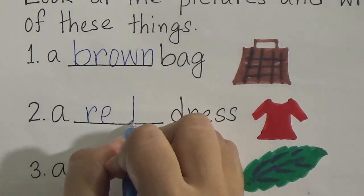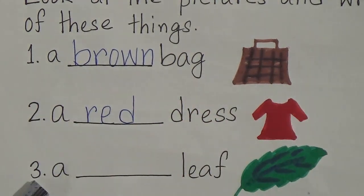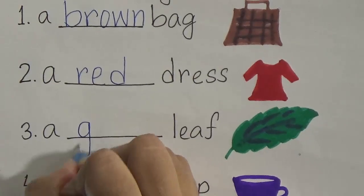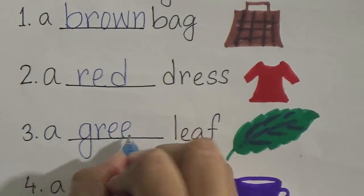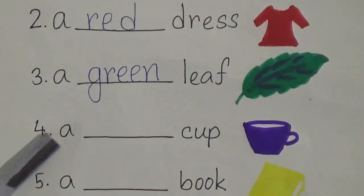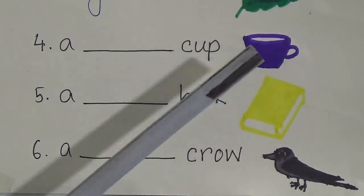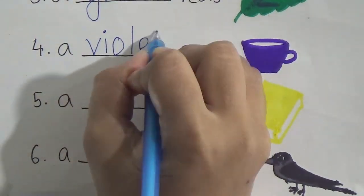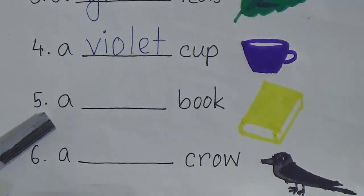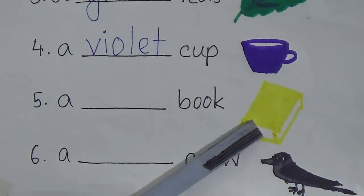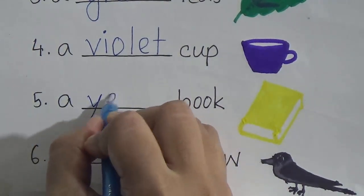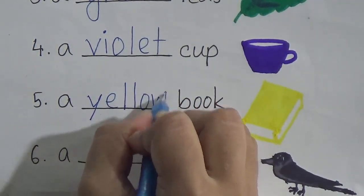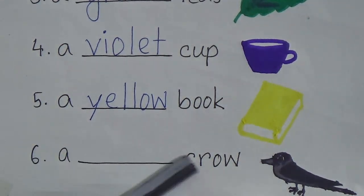Number three: a blank sleeve — the color of the sleeve is green. We will write here: green (G-R-E-E-N). Number four: a blank cup — the color of this cup is violet. We will write here: violet (V-I-O-L-E-T). Number five: a blank book — the color of this book is yellow. We will write here: yellow (Y-E-L-L-O-W). Number six: a blank crow — the color of this crow is black. We will write here: black (B-L-A-C-K).